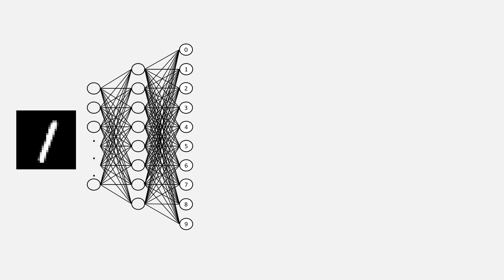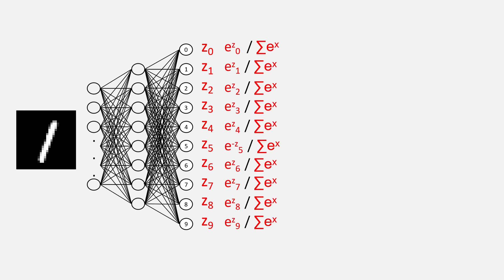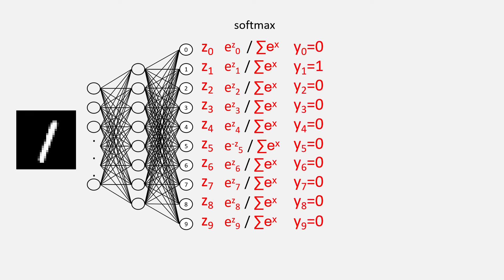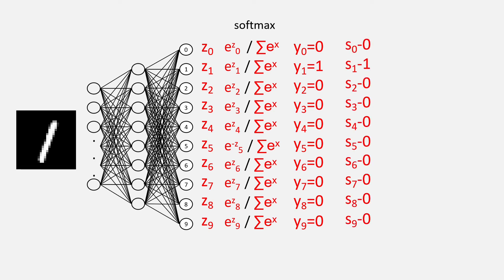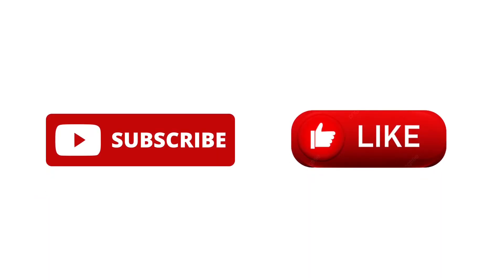Now let's have a quick example for an input image 1. We give our neural network the image and it outputs 10 numbers. We take the exponent of each number and divide by the sum of all exponents — this is the softmax. Since we know we put the image of 1, the y vector or true distribution will have 0s at every position except 1 at the position of digit 1. Then we subtract the true distribution y from the predicted softmax distribution and get this. How to use this for backpropagation is a topic for the next video. Don't forget to subscribe to the channel and hit the like button.